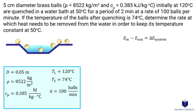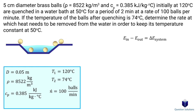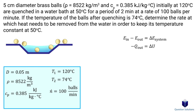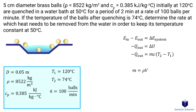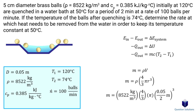We will take a single brass ball as the system. The ball will release a certain amount of energy — it will dissipate heat once it enters the water. If we remove the same amount of heat that's dissipated from the water, the water temperature will remain the same. Energy in minus energy out equals the change in energy. There is no energy input, but there is energy out from the ball dissipating heat, equal to the change in internal energy of the ball. Don't forget the negative sign. Mass is density times volume; the volume of a sphere is found using the standard formula, dividing the diameter by 2 to get the radius. Solving gives us the mass.